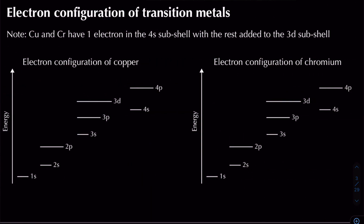There are two awkward examples to be aware of: 'curious copper' and 'crafty chromium.' These two elements have only one electron in the 4s subshell, with the remainder added to the 3d subshell. Copper has 29 electrons and chromium has 24 electrons.